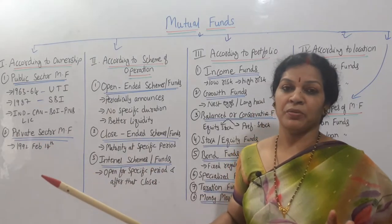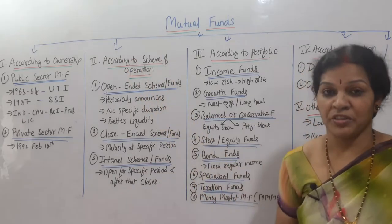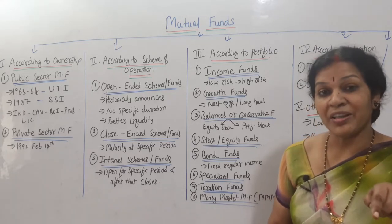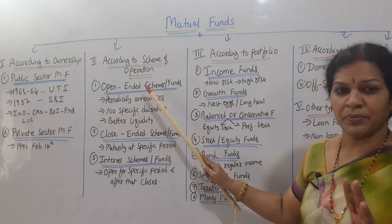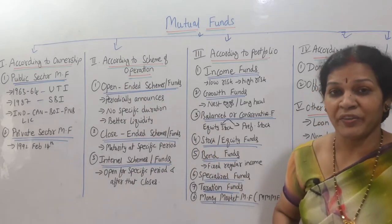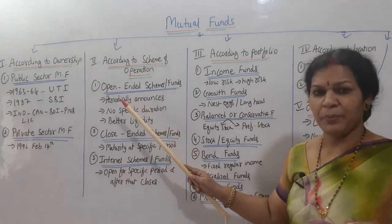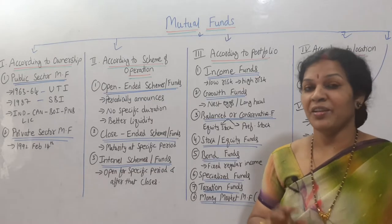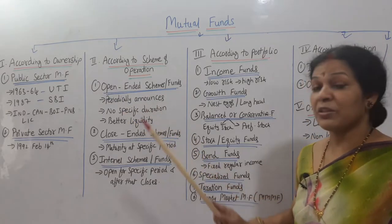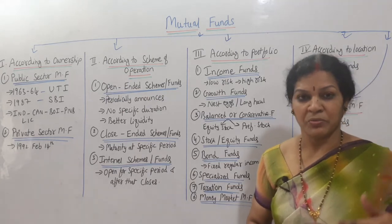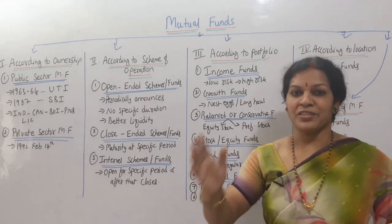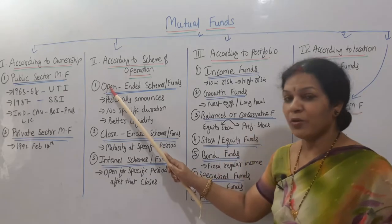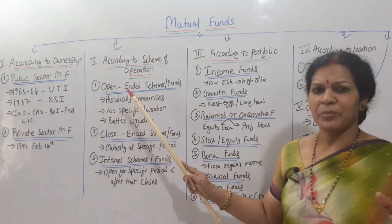The second category is according to scheme of operation — meaning when you want to put in your investment and when you want to withdraw it. According to the scheme of operation, there are three kinds of mutual funds. The first one is open-ended funds. Open-ended funds periodically announce the fund, and whenever announced you can purchase it. There is no specific duration — once you purchase, it is endless. You can buy any time and sell any time.